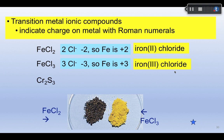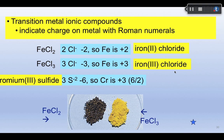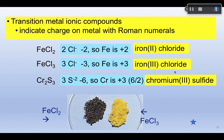One more example: chromium, another transition element with an unpredictable charge. In Cr2S3, sulfide has a minus 2 charge and there are three of them, giving a total of minus 6. The two chromiums together must total plus 6, so each chromium is plus 3. The name is therefore chromium(III) sulfide. Notice that nothing extra is specified on the sulfide because the formula is electrically neutral as written.